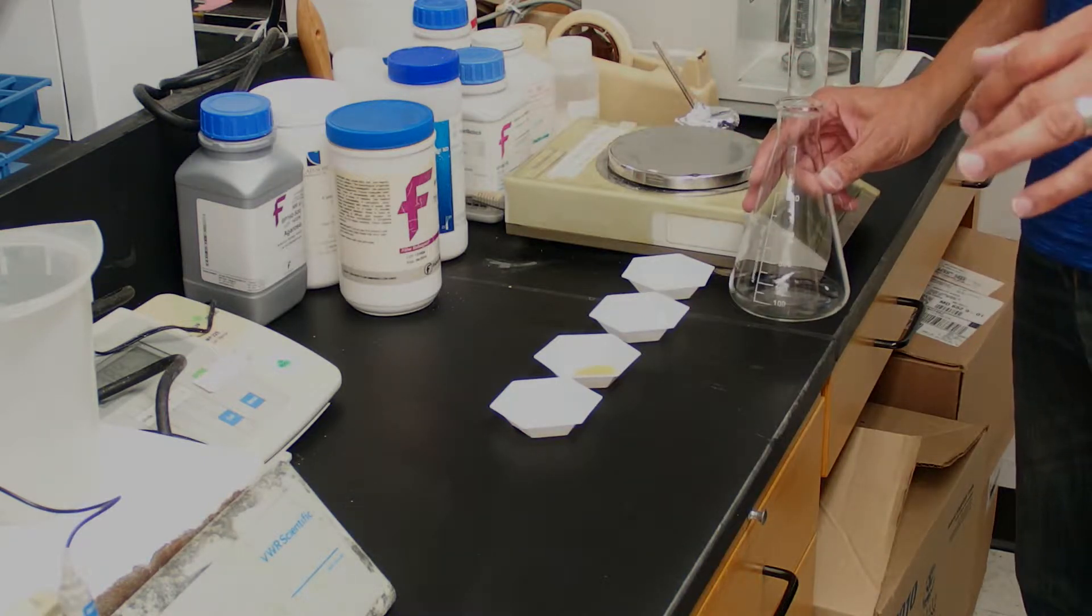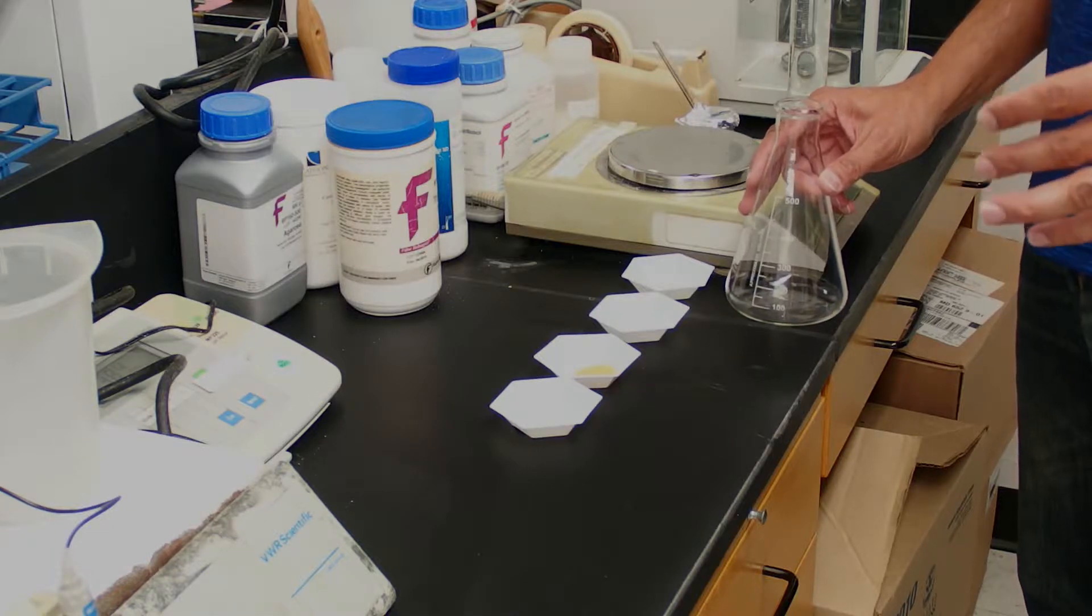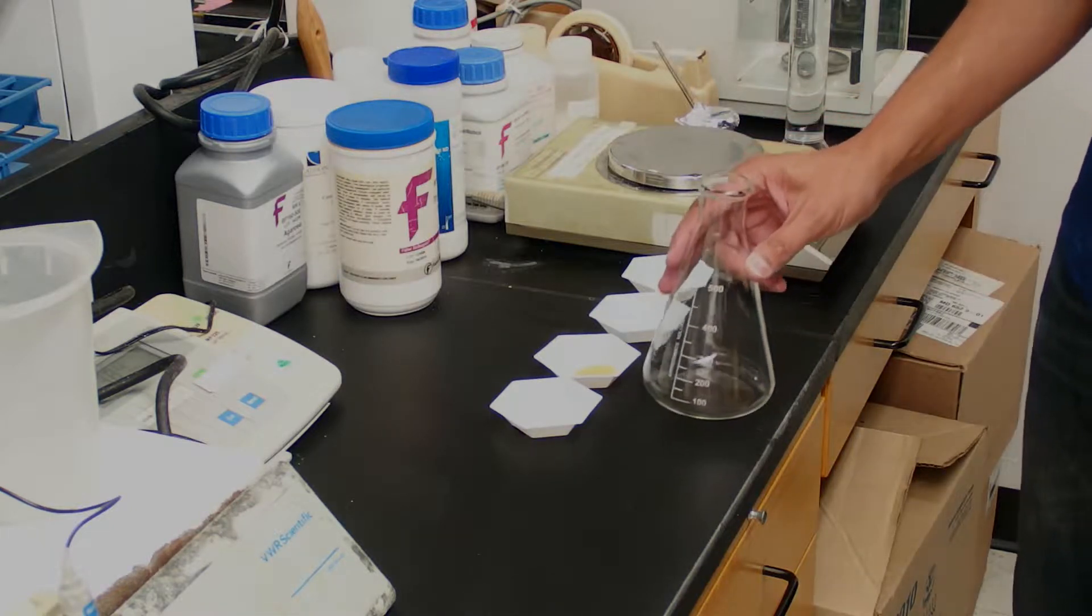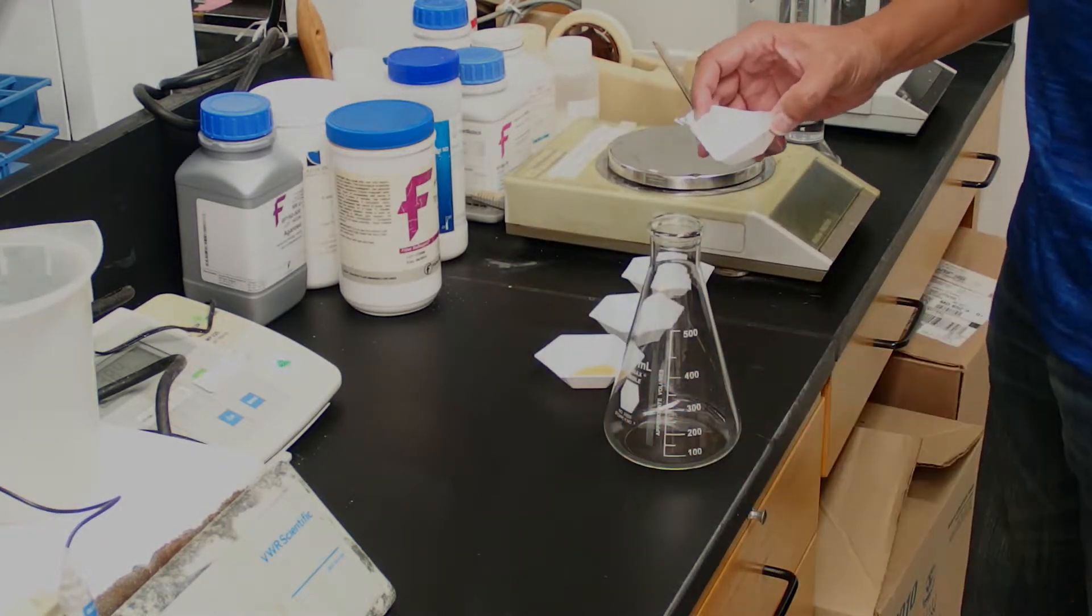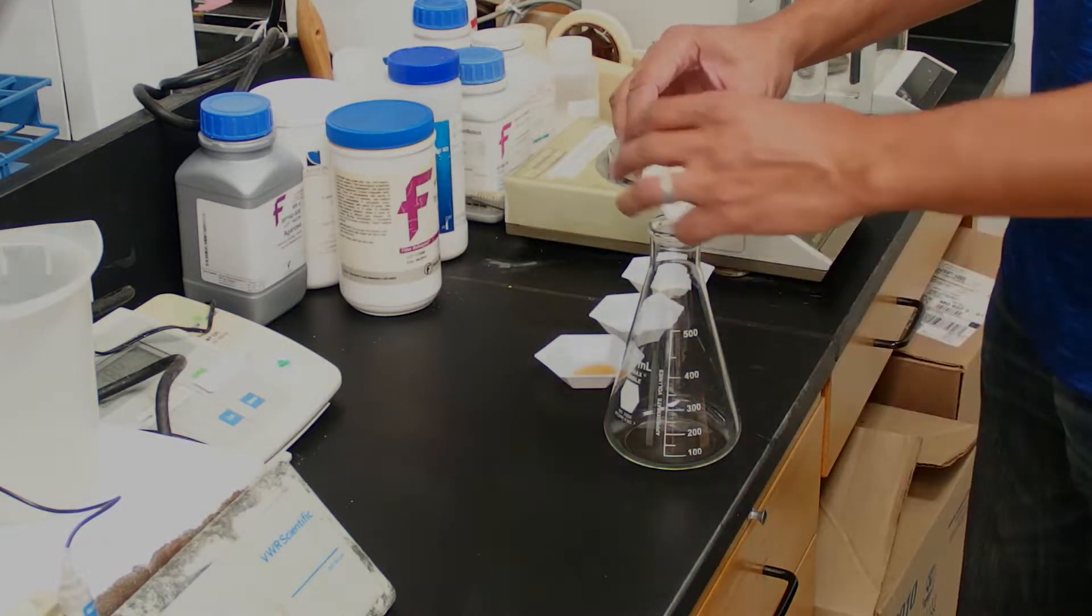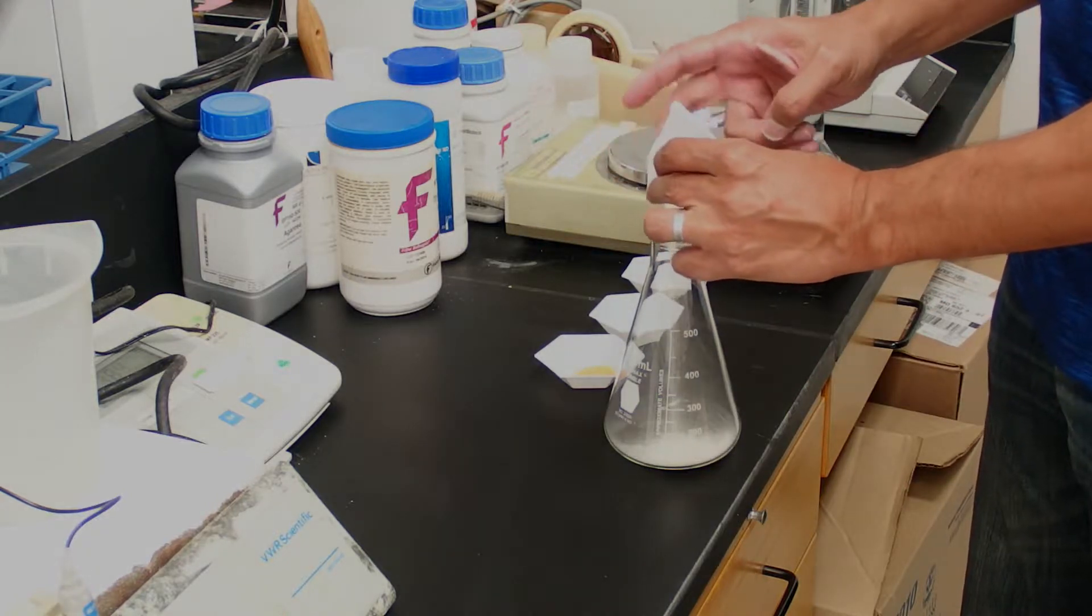Here we're making the easiest possible LB agar that you can make. So we're just going to weigh these things out, add them to a flask. I'm going to make 200 milliliters of LB agar. I'll just pour that into the flask.